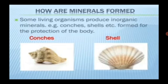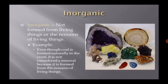Some living organisms produce inorganic minerals — for example, conches, shells, etc. — formed from the protection of the body. Inorganic means not formed from living things or the remains of living things. For example, even though coal is formed naturally in the crust, it is not considered a mineral because it is formed from the remains of living things.